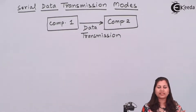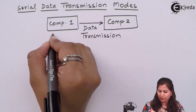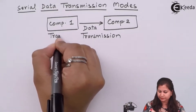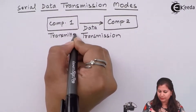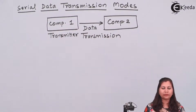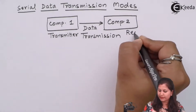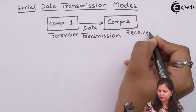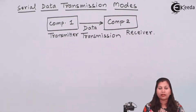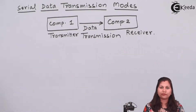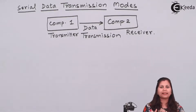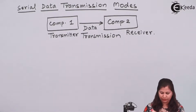The component which is sending the data will be called the transmitter, and the second component which is receiving the data will be called the receiver. Now this data transmission between the components can be of two types: serial data transmission and parallel data transmission.